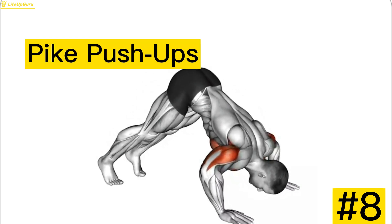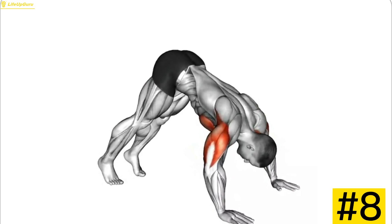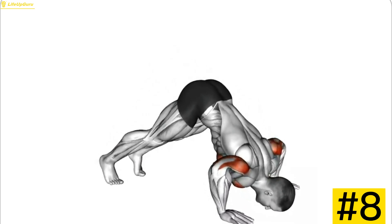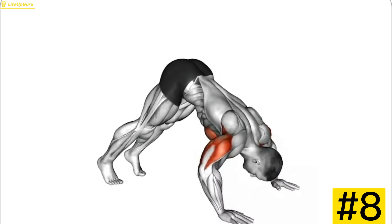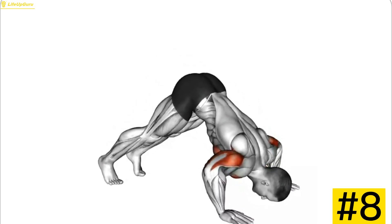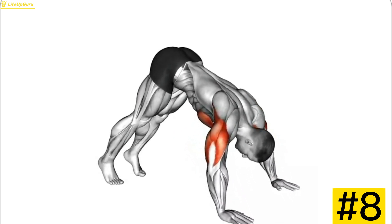Exercise 8, Pike Push-Ups. Want to build strong shoulders without weights? Pike push-ups are perfect. Get into a downward dog position, keeping your legs and back straight. Lower your head towards the floor by bending your arms and then push back up. Your shoulders will thank you later.